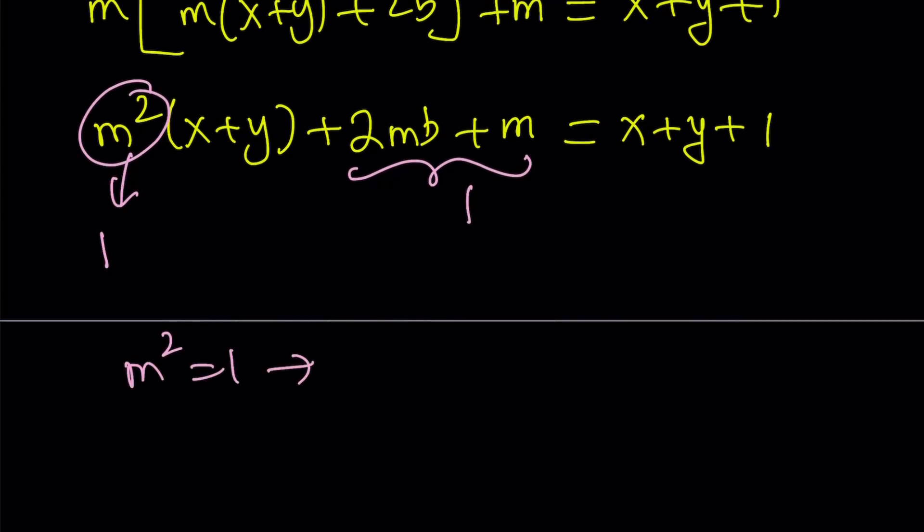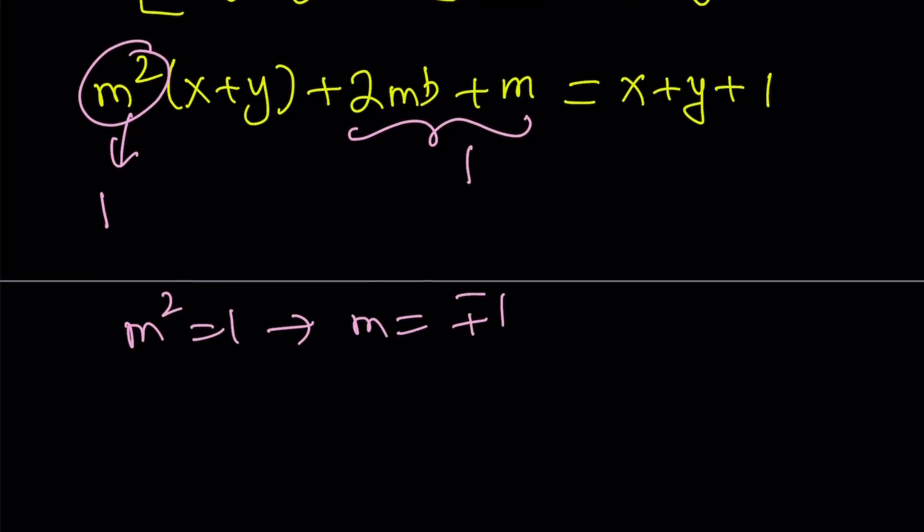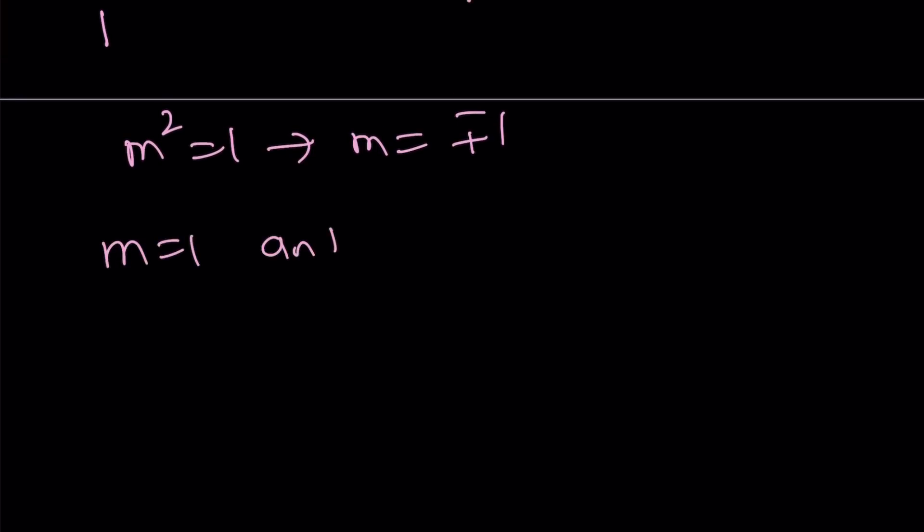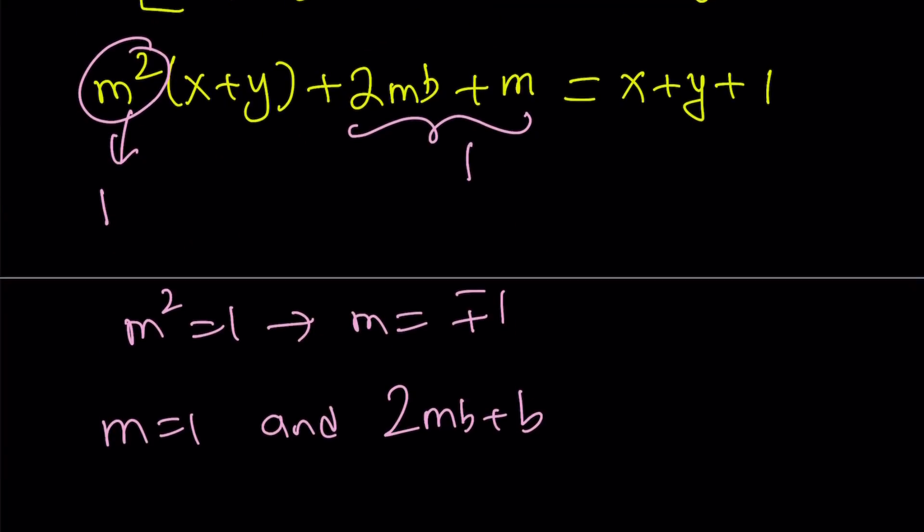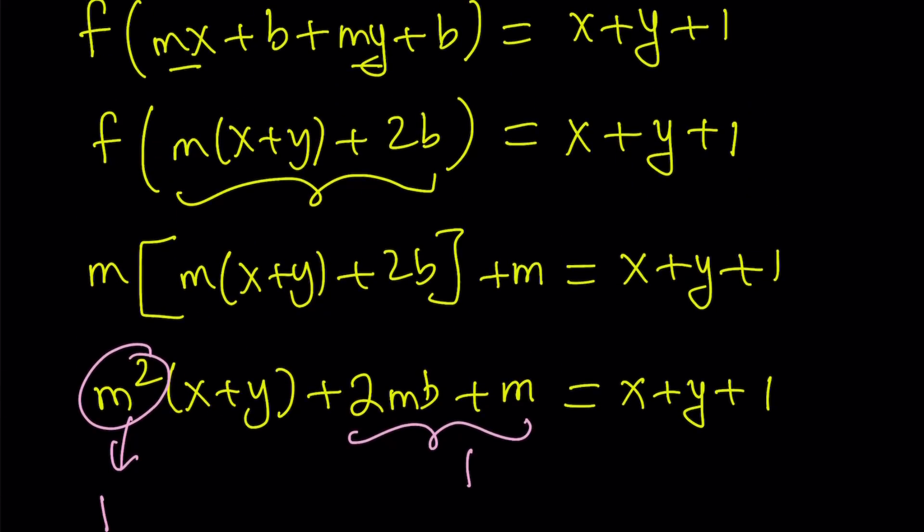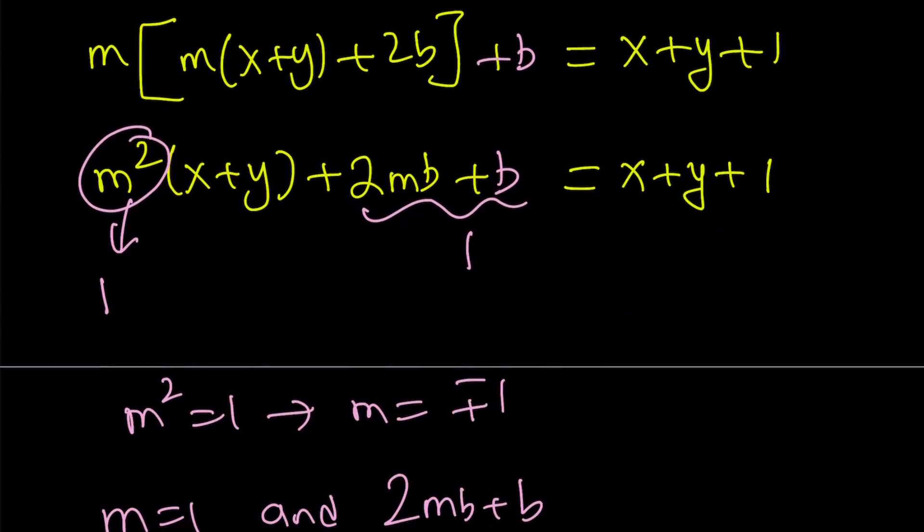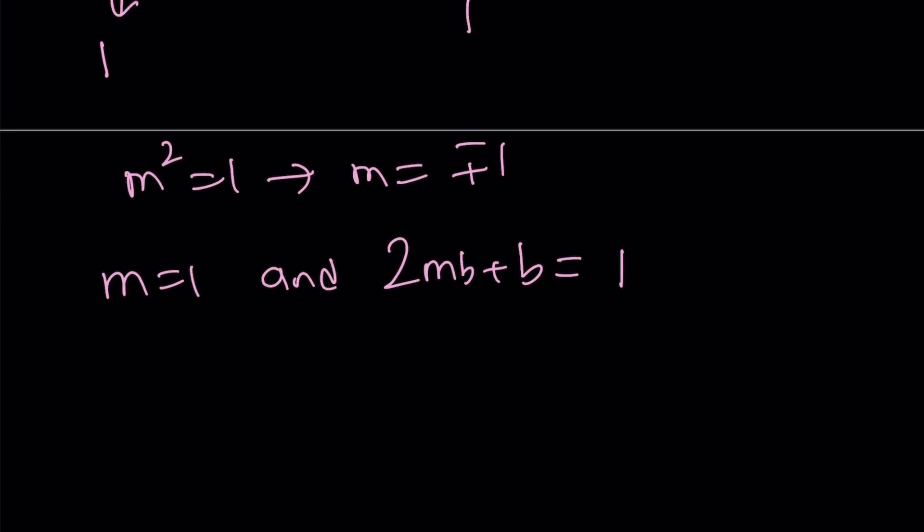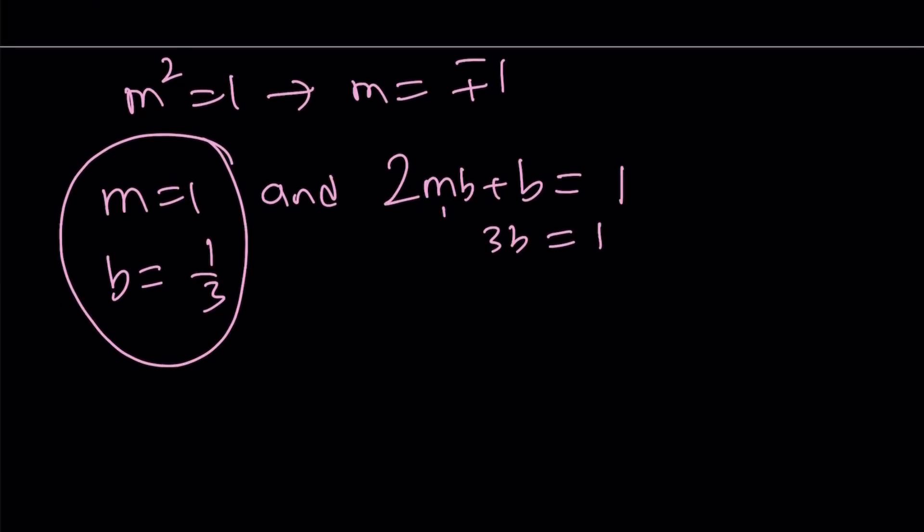So we get a system of equations. m² = 1 implies m = 1 or m = -1. So m = ±1. We can safely say that m = 1 and 2mb + b - by the way, it's not 2mb plus, I made a mistake there. This is supposed to be b. I apologize. That is not m. So this needs to be 1. Therefore, 2mb + b needs to be 1. If m is equal to 1, you get 2b or not 2b. 2b + b = 1, 3b = 1, and that means b = 1/3. And the other set is if m = -1 and 2mb + b = 1. If m = -1, it's going to give us -b = 1, b = -1.